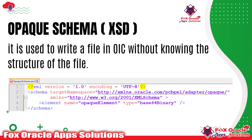Sometimes we still need to get the file from somewhere — like getting the file from a web service or from an SFTP server. At that time we need to specify a structure so that OIC can understand we are going to get a file, but we don't have the structure. That's why opaque schema comes into the picture — it is used to work with a file in OIC without even knowing the structure of the file.